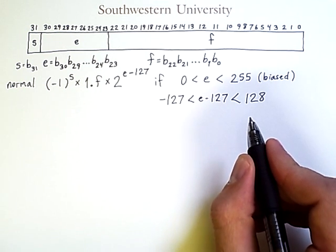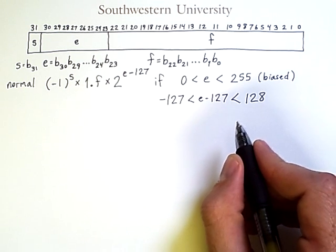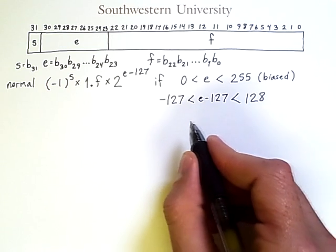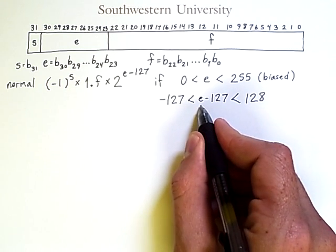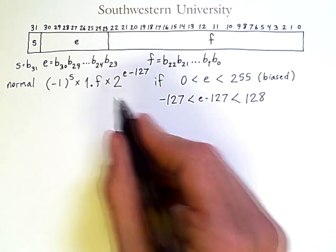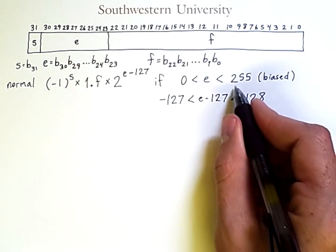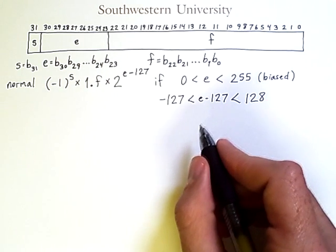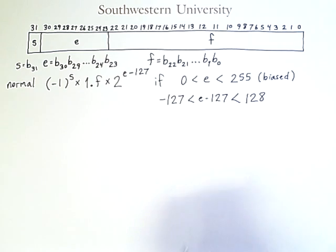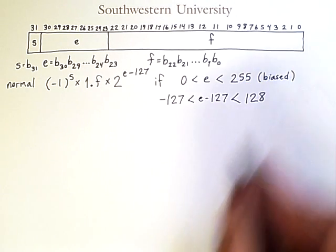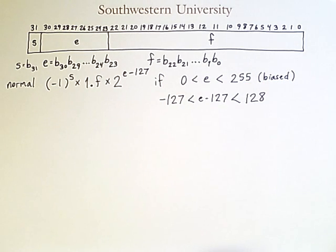If you are good with your binary numbers, then you should realize that this means that if E is all 0s or all 1s, we'll have values outside of this range, and we have a different interpretation of the bits in these fields. And that is necessary because, as was pointed out last time, we don't have a way of representing 0.